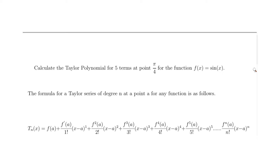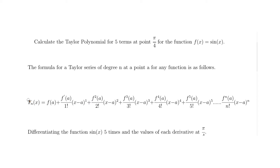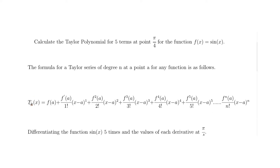Here is the generic formula for Taylor polynomials. Basically, we substitute n with 5 because that's the degree, and all the a's become π/4. So we calculate f(π/4), which is sine of π/4, then the first derivative at π/4 divided by 1 factorial times (x − π/4), then the second derivative at π/4 divided by 2 factorial times (x − π/4) squared.